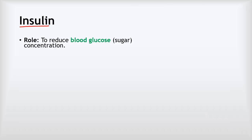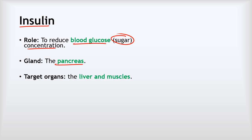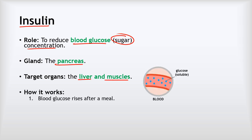The first hormone we're going to look at in detail is insulin. The role of insulin is to reduce the concentration of glucose in our blood — glucose just being a type of sugar. Sometimes you might hear about blood sugar concentration, sometimes blood glucose concentration; they mean the same thing. The gland that releases insulin is called the pancreas, and the target organs — the organs affected by it — are the liver and muscles. After we eat a meal, the blood glucose concentration rises because our meal contains lots of glucose, which we digest and it all gets absorbed into the blood.